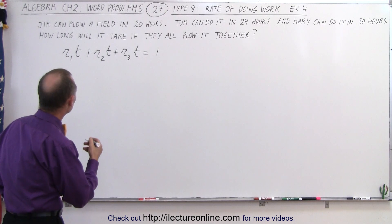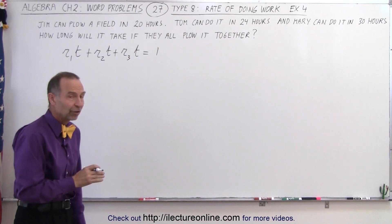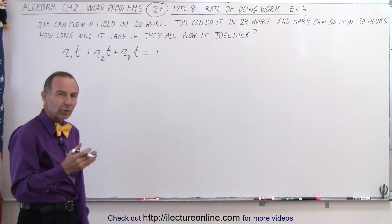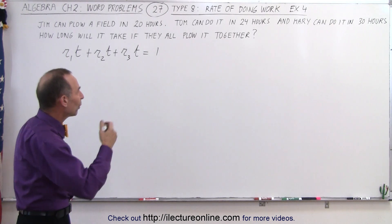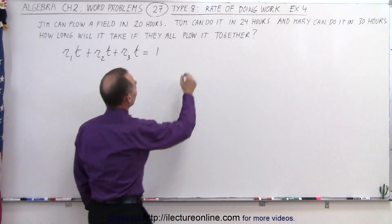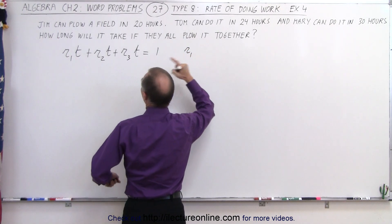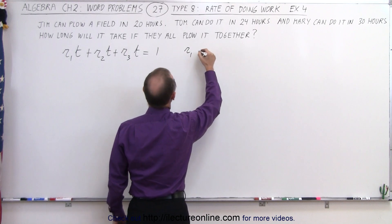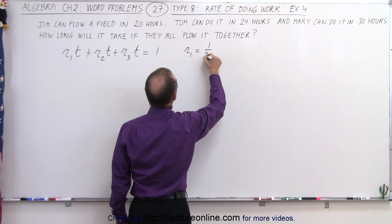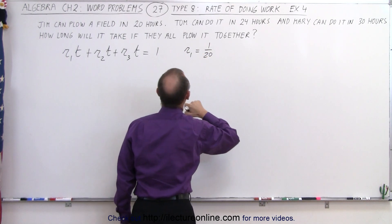Well, if Jim can plow a field in 20 hours, then he can plow 1/20th of a field in every hour. So the rate for the first person, Jim, is equal to 1/20th of a field in every hour.